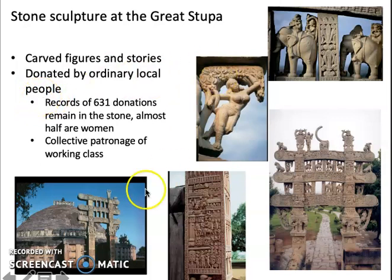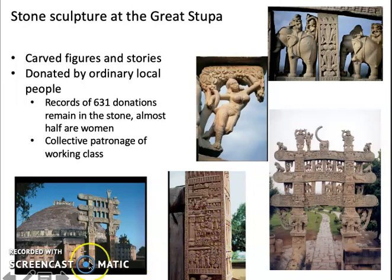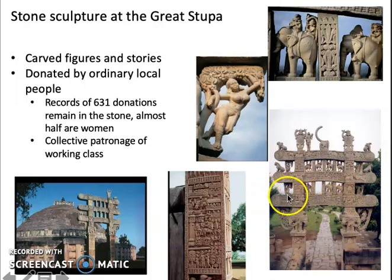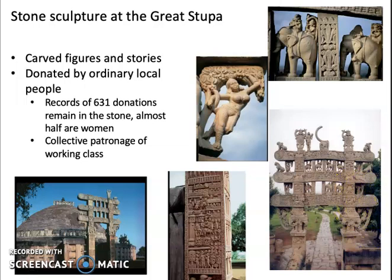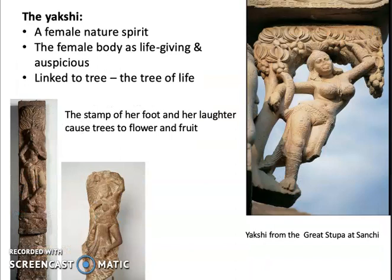Ashoka may have initiated this project, but by the time the sculptures were made for the gateways, ordinary people were showing their devotion to the teachings of the Buddha by paying for carvings to go on this sacred structure. This is actually collective patronage of ordinary people rather than the patronage of a king. These are interesting because they're made out of stone but they actually mimic the kind of wooden architecture used in everyday building — it's the translation of wooden, impermanent, transient materials into a more durable material that evokes permanence, which is actually what they did at Stonehenge as well.